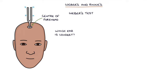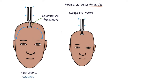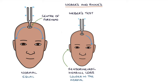A normal result on Weber's test is when the patient hears the sound equally in both ears. In sensorineural hearing loss, the sound will be louder in the normal ear and quieter in the affected ear, because the normal ear is better at sensing the sound.